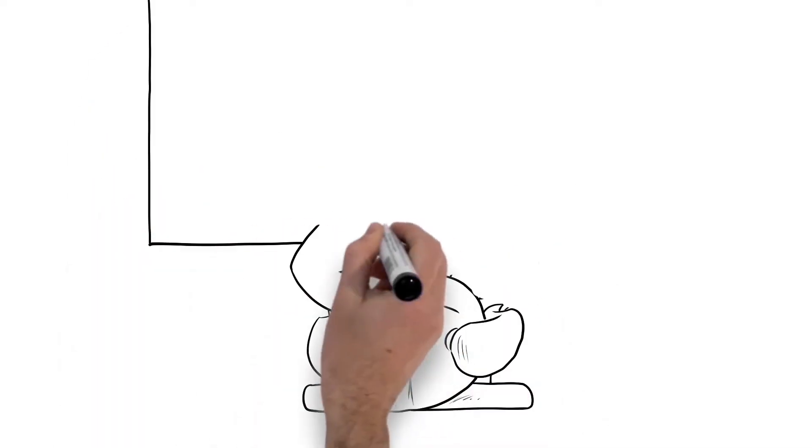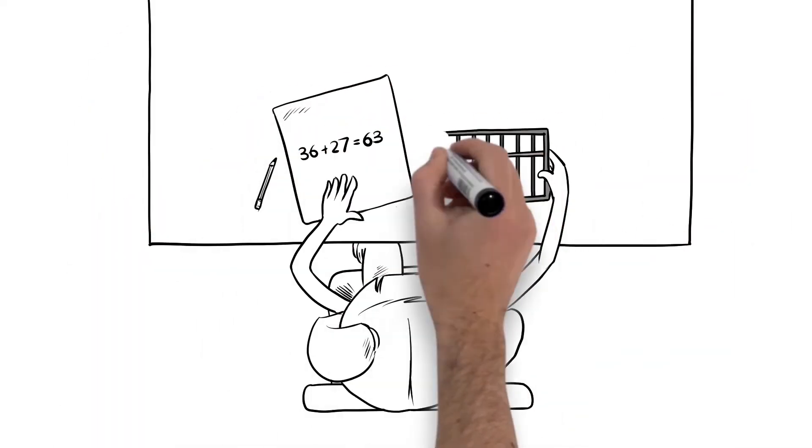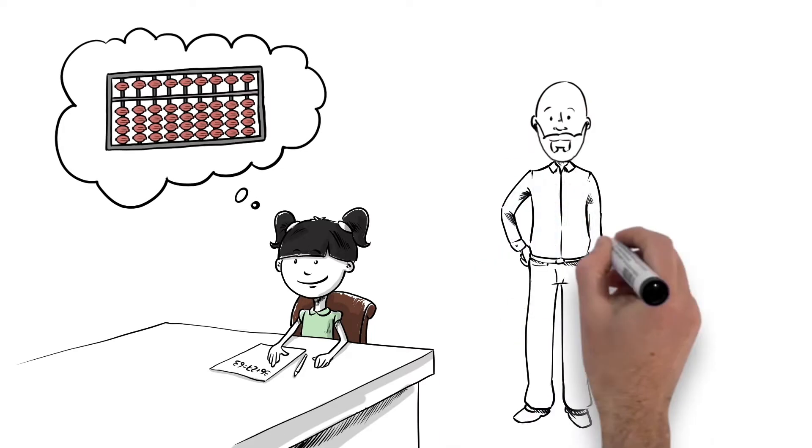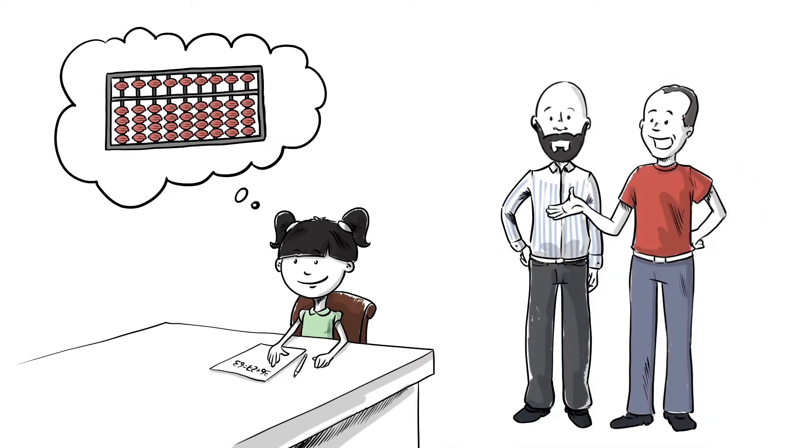Then one day, I saw my friend Terry's daughter, who's the same age as my daughter, adding big numbers with ease using a Japanese abacus called the Soroban. And then she did it in her head without the abacus.